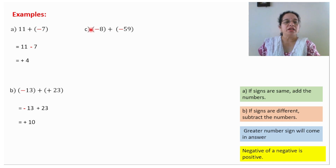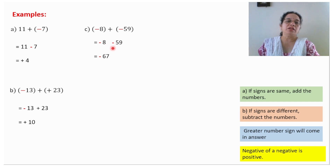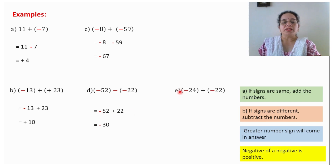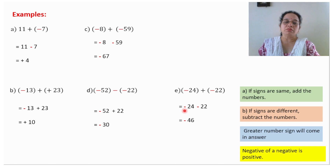No sign means plus sign. One sign is negative, so this will become negative 8. Here one sign is minus, so this will become negative 59. Signs are same, add the number — 59 plus 8 will give you 67 — greater number sign will come in the answer: minus 67. No sign means positive, one sign is negative, so this will become minus 52. Negative of a negative is positive, so this will become plus 22. Signs are different, subtract the number — greater number sign will come in the answer — the answer will be negative 30. Plus sign is there, so this will become minus 24. This will become minus 22. Signs are same, add the number, greater number sign will come in the answer: minus 46.